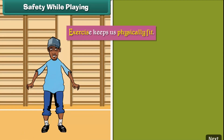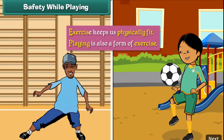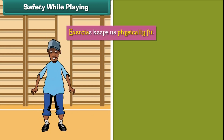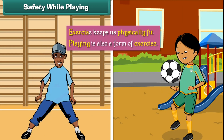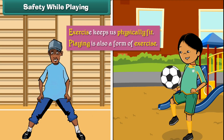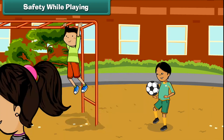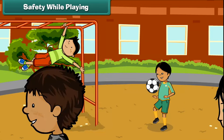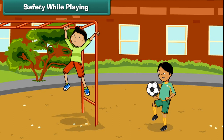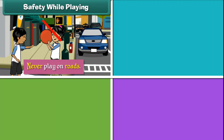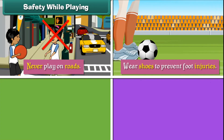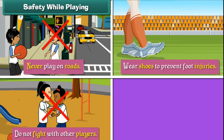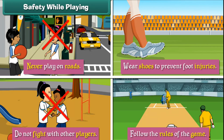Safety while playing. Exercise keeps us physically fit, and playing is also a form of exercise. Outdoor games keep us active. To prevent mishaps while playing outdoor games, follow these rules: never play on roads; wear shoes to prevent foot injuries; do not fight with other players; and follow the rules of the game.